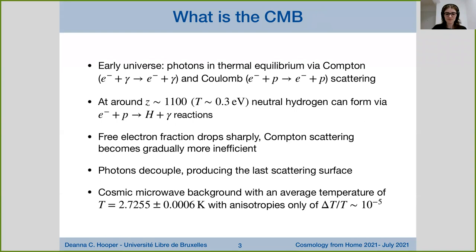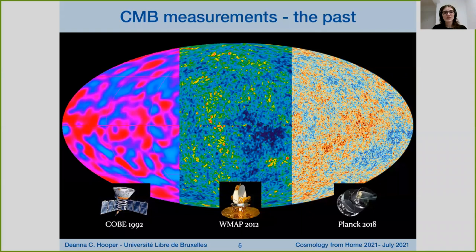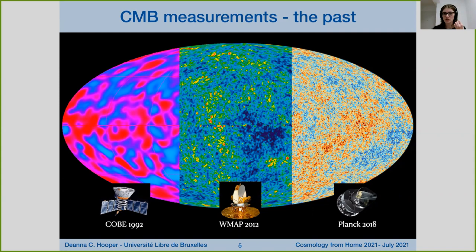These temperature distortions are of the order of 10 to the minus 5. The first experiment to measure these anisotropies was the COBE mission, which released its latest data in 1992. Then we had WMAP, which released data for nine years, with the latest release in 2012. The most recent satellite observations come from the Planck satellite, which flew between 2009 and 2013, with three data releases in 2013, 2015, and 2018. The maps from these missions show progressively improving resolution and detail of the anisotropies.